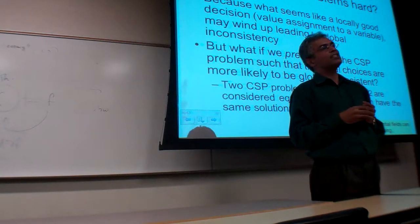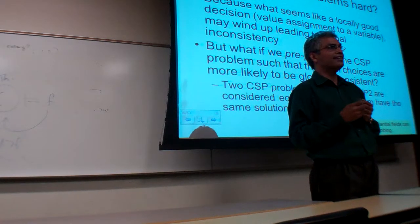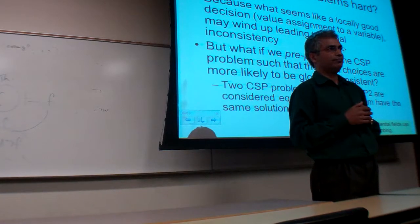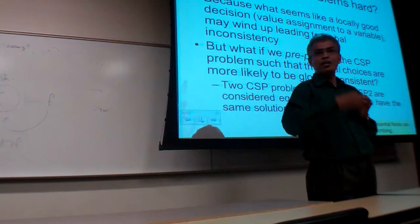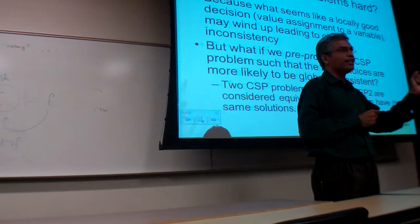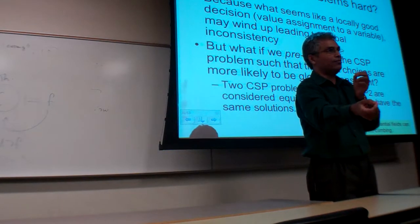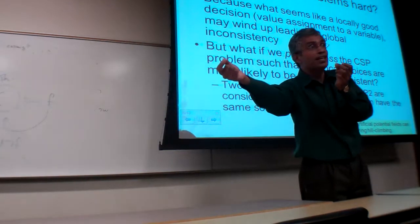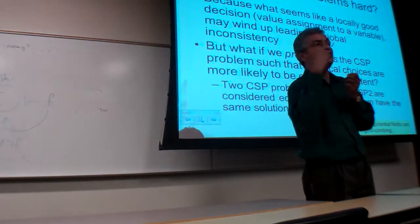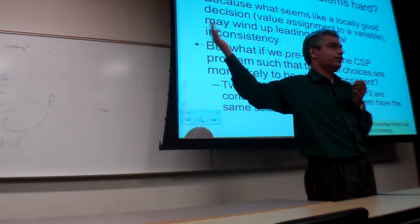If you are given a CSP which is strongly n-consistent, then you don't have to do search. Because you can pick a variable, give it a value, then you can pick any other variable. Because it's too consistent, you should be able to give it a value. Now you have two variables with a value, then you should be able to pick any third variable and you should be able to give it a value because it's three-consistent. And so on all the way to the end.